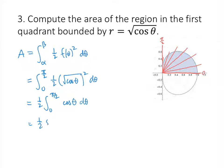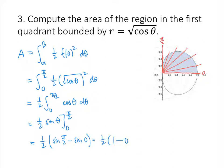The antiderivative of cosine is sine. So this is 1/2 times the sine of pi over 2 minus the sine of 0. Sine of pi over 2 is 1, sine of 0 is 0, so the area is just 1/2.